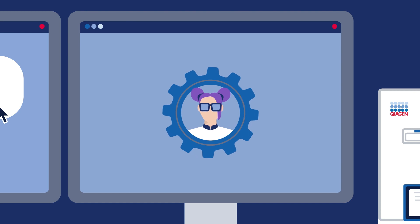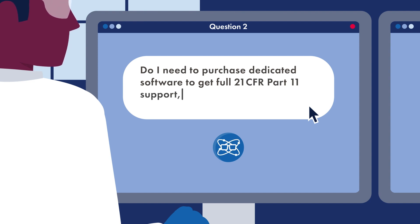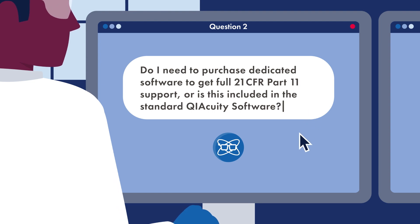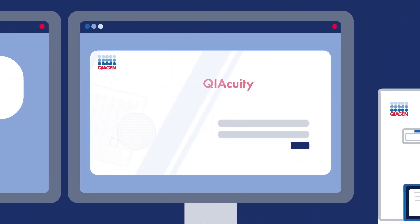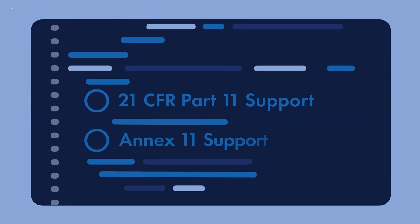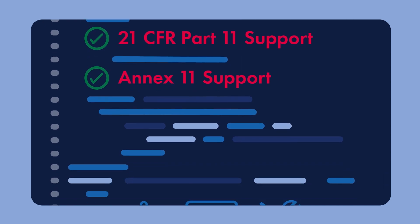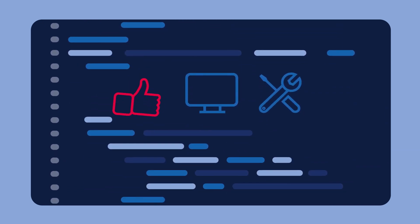Question 2: Do I need to purchase dedicated software to get full 21 CFR Part 11 support, or is this included in the standard KaiaQuity Software? There is no need for additional software. The 21 CFR Part 11 and Annex 11 support features come with the standard KaiaQuity Software, with constant improvements to user experience, additional features, and timely updates to the software.